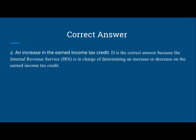D is the correct answer because the IRS, the Internal Revenue Service, is in charge of determining an increase or decrease in the earned income tax credit. It is not the responsibility of the Federal Reserve Board of Governors to determine whether the earned income tax credit should increase or decrease. So the correct answer is D.